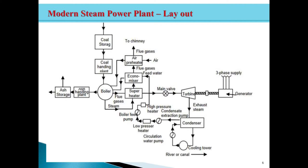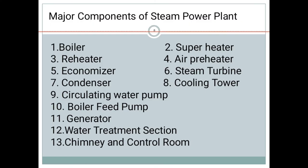And modern steam power plant major components are boiler, super heater, reheater, air preheater, economizer, steam turbine, condenser, cooling tower, circulating water pump, boiler feed pump, generator, water treatment section, chimney and control room.